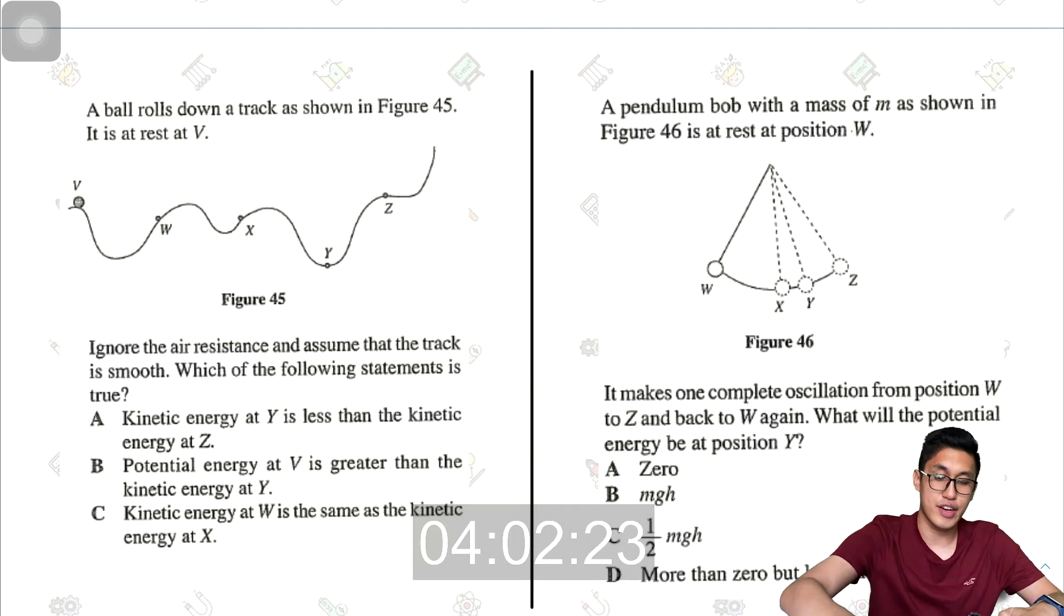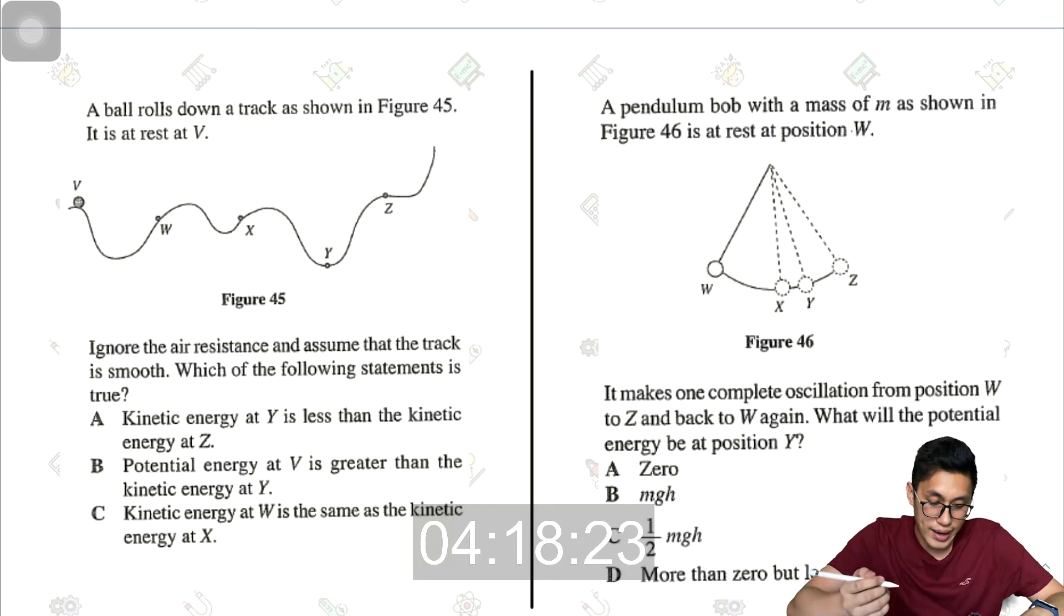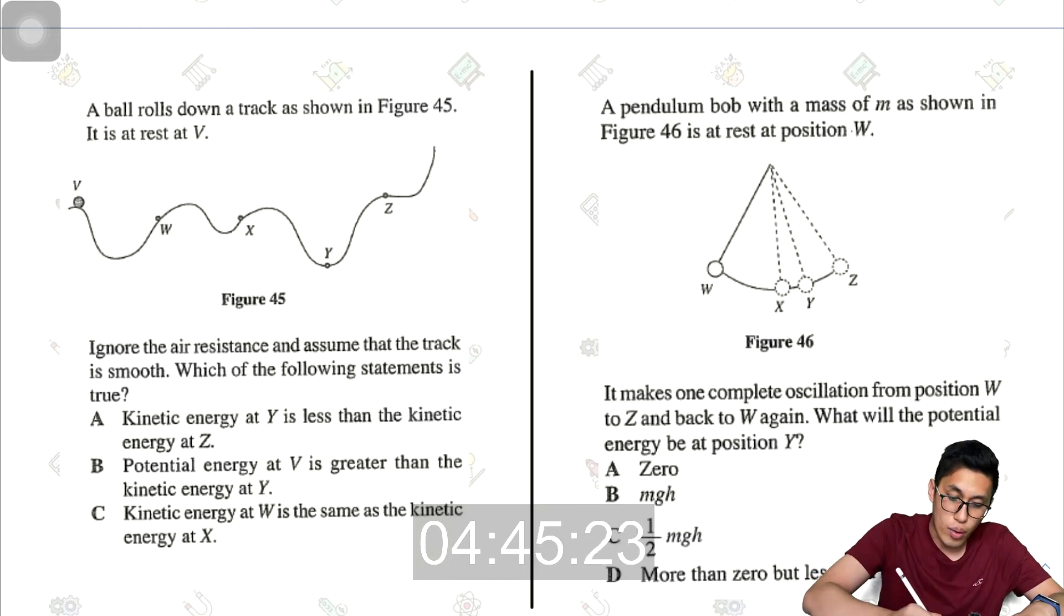And the next one. A ball rolls down a track as shown in figure 45. It is at rest at V. Ignore the air resistance and assume that the track is smooth. Which of the following statements is true? So this is a kinetic potential energy question. Kinetic energy at Y is less than kinetic energy at Z. So at the top here, there will be maximum potential energy. So as it goes down, it will lose its potential energy and it will be converted into kinetic energy. So at the bottom most part, you will have zero potential energy and maximum kinetic energy.